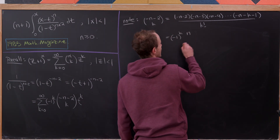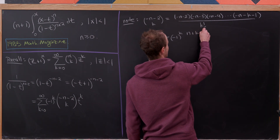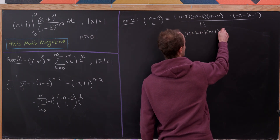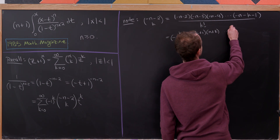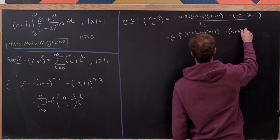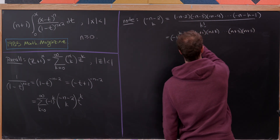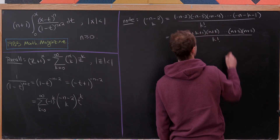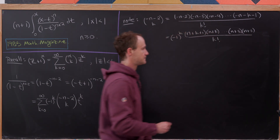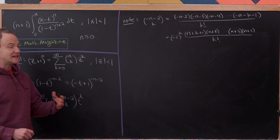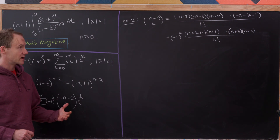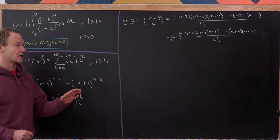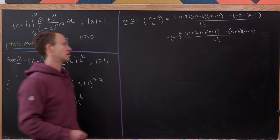We're left with n plus k plus 1 times n plus k, all the way down to n plus 2, over k factorial. This descending product of k terms starting at n plus k plus 1, divided by k factorial, is exactly the binomial coefficient n plus k plus 1 choose k.